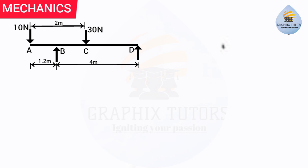The first thing we do is consider the conditions for equilibrium. We have three conditions. First, summation of Fx equals zero, meaning all forces acting to the right must equal all forces acting to the left — all horizontal forces equal zero. Second, summation of Fy equals zero, meaning all upward forces must equal all downward forces — all vertical components equal zero.